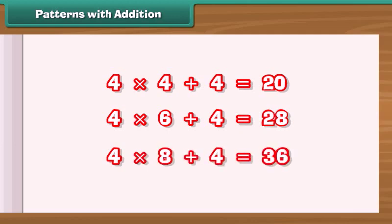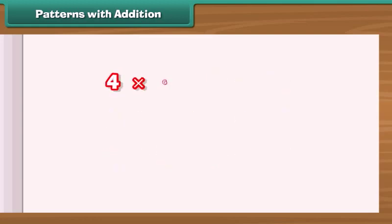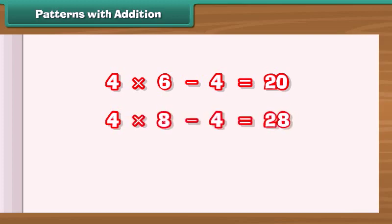There is one more interesting fact. Each sum is 4 less than 4 times the third term. 4 times 6 minus 4 is 20. 4 times 8 minus 4 is 28. 4 times 10 minus 4 is 36.